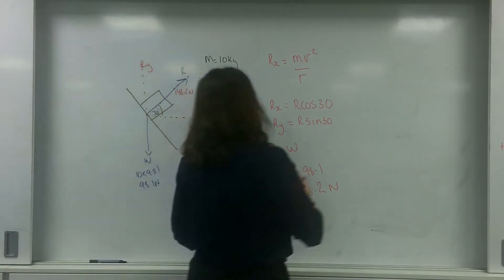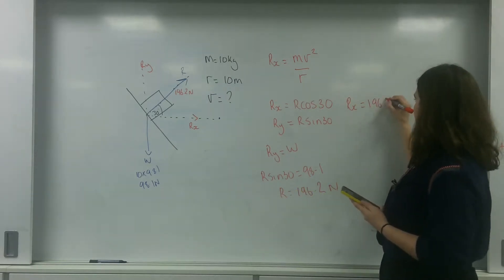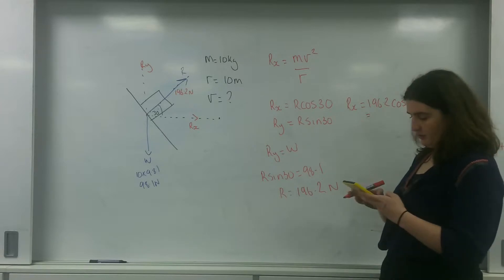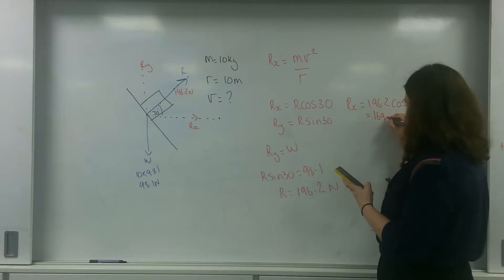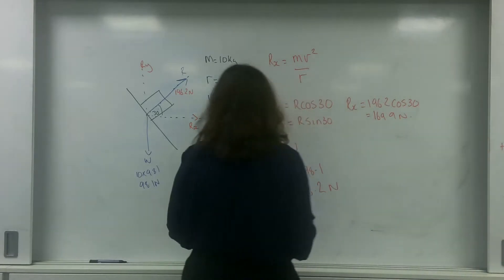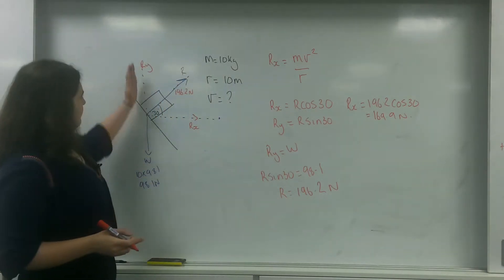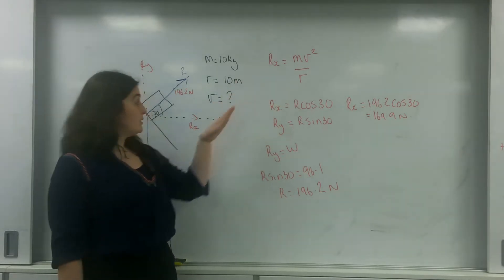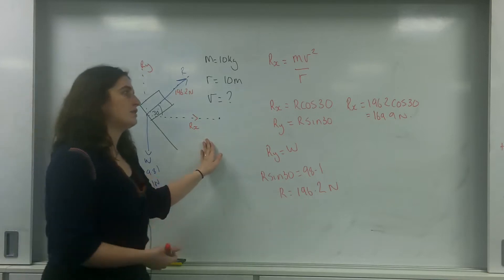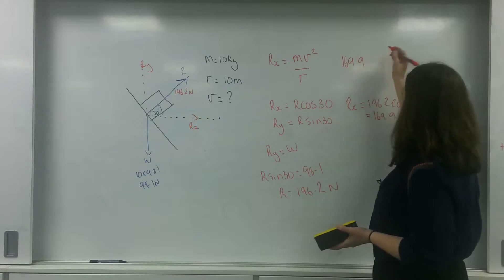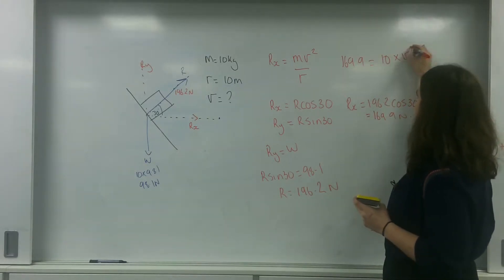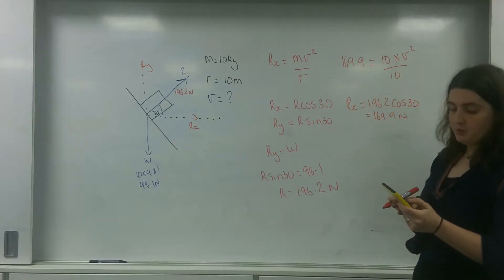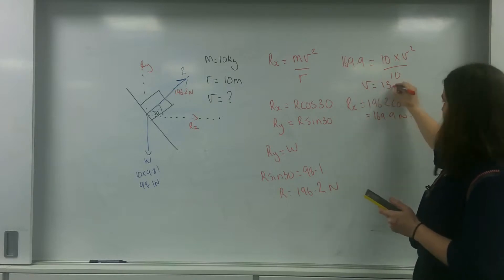Now I put that into my Rx. So Rx is 196.2 times cos 30, giving 169.9 Newtons. That makes sense because the reaction force is working more in the X direction. Now I know Rx, I can use circular motion: 169.9 equals 10 times V squared over 10. So V squared equals 169, and therefore V equals 13 metres per second.